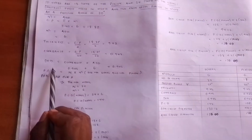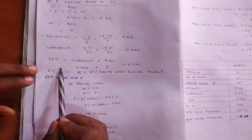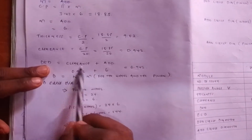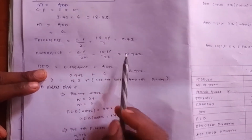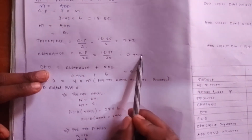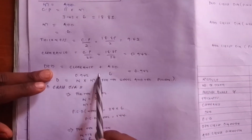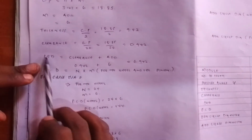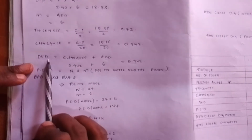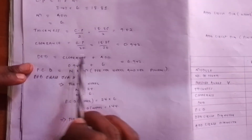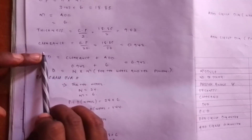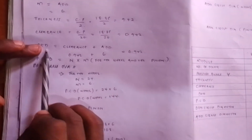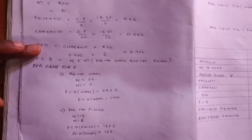Now I want us to look at the dedendum. How do you look for the dedendum? Dedendum is always equal to clearance plus addendum. Our clearance we found is 0.942, so it is 0.942 plus 6. Dedendum is very crucial when we are looking for the dedendum circle diameter. Realize, dedendum is different from dedendum circle diameter — we use the dedendum to look for the dedendum circle diameter.